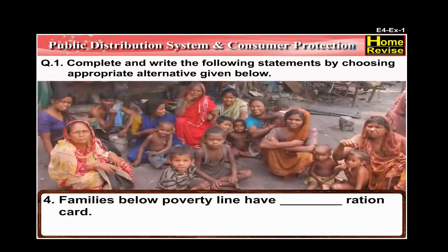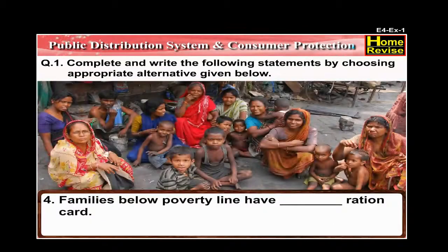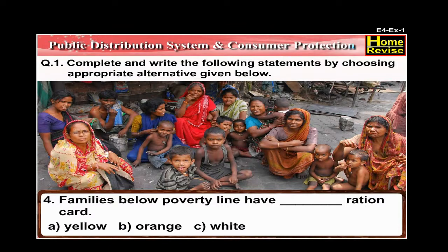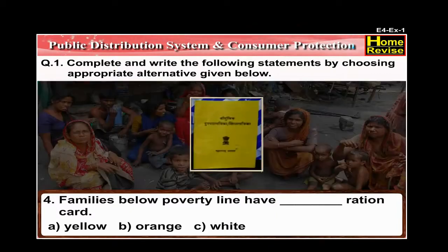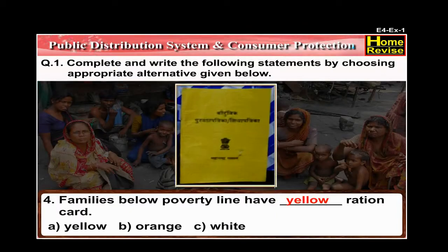Number 4: Families below poverty line have a dash Ration Card. Options are Yellow, Orange, or White. The answer is: families below poverty line have a Yellow Ration Card.